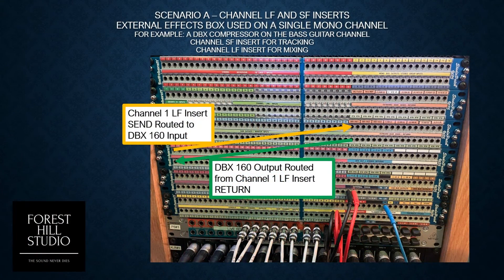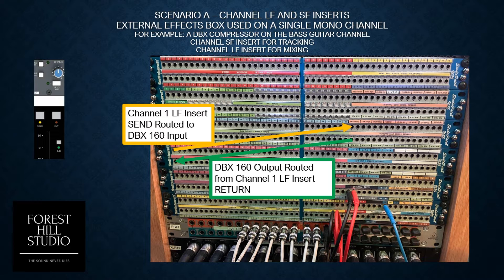Here in this scenario we're using the channel long and short fader insert for an external effects box used on a single mono channel — for example, a DBX compressor on the bass guitar channel. You can see it's routed to the channel 1 long fader insert send, over to the DBX 160, and then back. On the long fader you'll need to engage the buttons in yellow to insert it into the channel path. The signal goes out, goes to the effects box, and returns onto the long fader channel section. This would be the same for a short fader using those inserts instead.